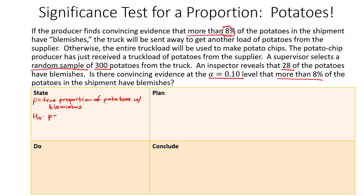Our null hypothesis is H₀: p = 0.08, since we start by assuming it equals 8%. Our alternative hypothesis is Hₐ: p > 0.08, since we want to see if it's more than 8%. We write down our alpha value: α = 0.10. Our sample p-hat is 28 out of 300. That completes our State box.